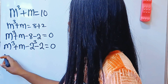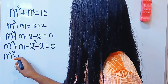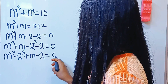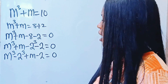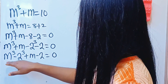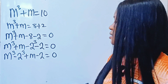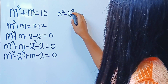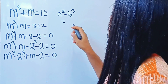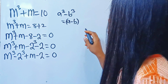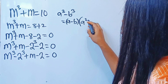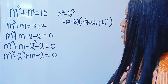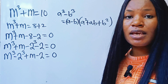Let's bring this together. We have m to the power of 3 minus 2 to the power of 3, plus m minus 2, equal to 0. Now there is an algebraic identity for something like this: a to the power of 3 minus b to the power of 3 equals a minus b, multiplied by a squared plus ab plus b squared. In this case, our a is m while our b is 2.